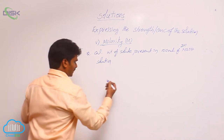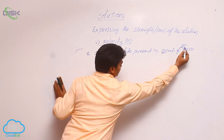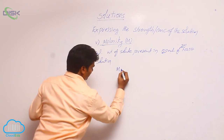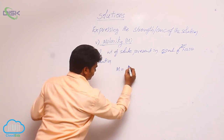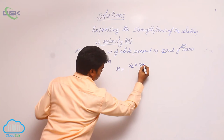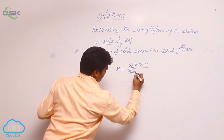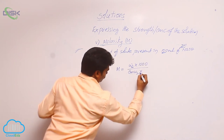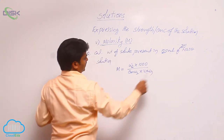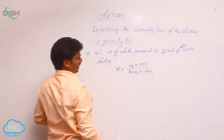For that, the volume is in ml and molarity is given. First, I use the standard formula: molarity is equal to weight of solute into 1000, divided by gram molecular weight into volume in milliliters. Because volume is in ml, that is why I took this formula.